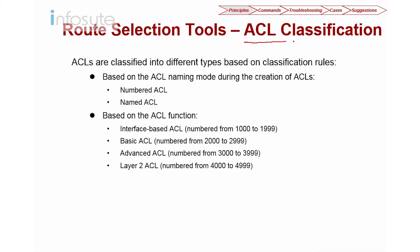Now let's look into the ACL classification. ACL can be created based on a number or a name — most often we use names because it's easier to reference. There are four types of ACL: interface-based ACL (seldom used), basic ACL (source IP), advanced ACL (source and destination IP, port, services), and L2 ACL (based on MAC address, source MAC, destination MAC, or even VLAN).